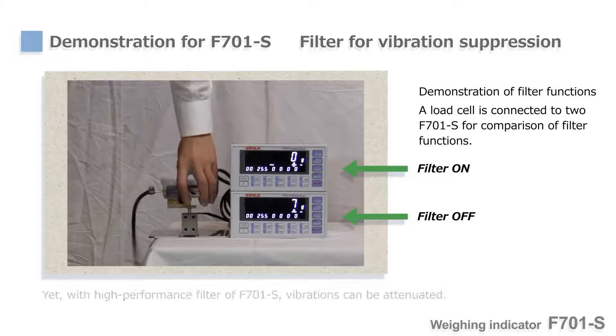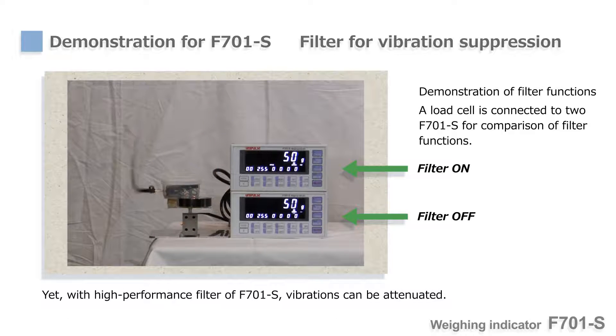In practice, peripheral devices may cause vibration in an automated weighing system, but by using the high-performance filter of F701S, accurate and fast weight measurement can be achieved without being affected by vibrations.